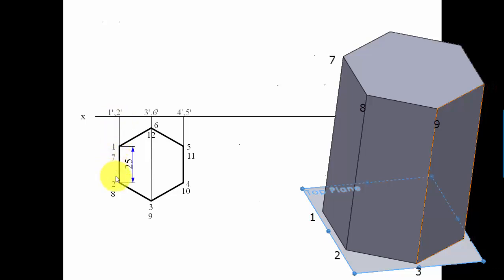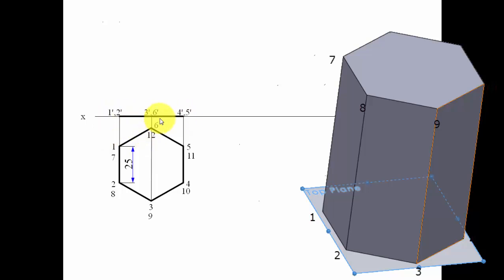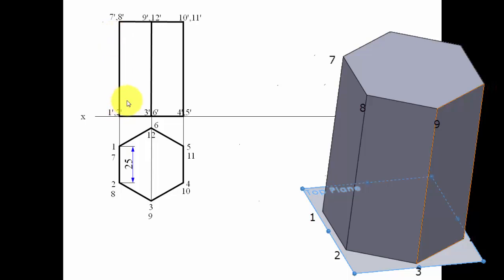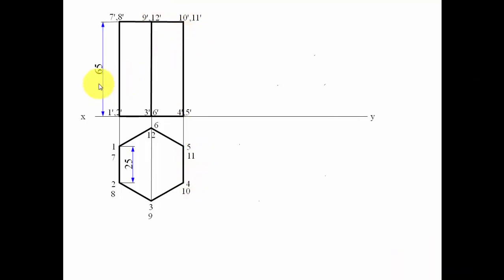We draw projector lines to create the corresponding front view. The bottom portion shows points one, two, six and the top hexagon corners seven to twelve. In the front view: one-two appears here, three-dash comma six-dash here, four-dash comma five-dash here. The top hexagon appears as a straight line with points seven-dash comma eight-dash, nine-dash comma twelve-dash, and ten-dash eleven-dash. We darken the bottom hexagon, then go upward by 65 mm for the top hexagon. The first step — hexagonal prism assumed standing — is complete.